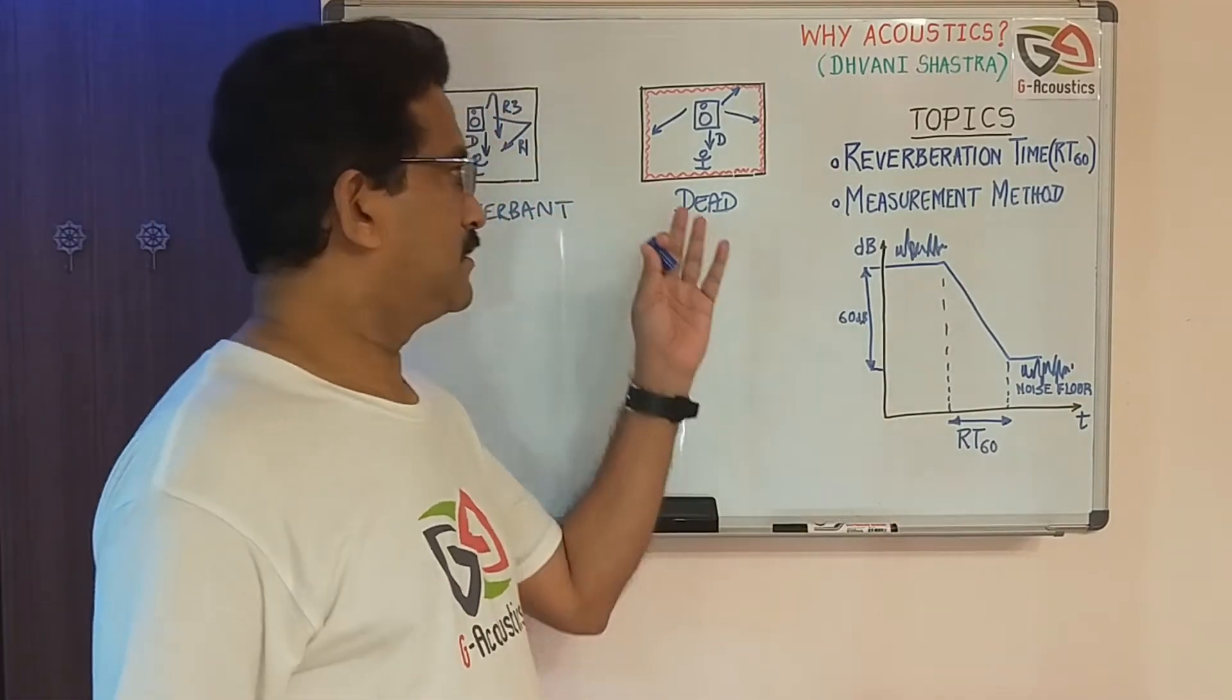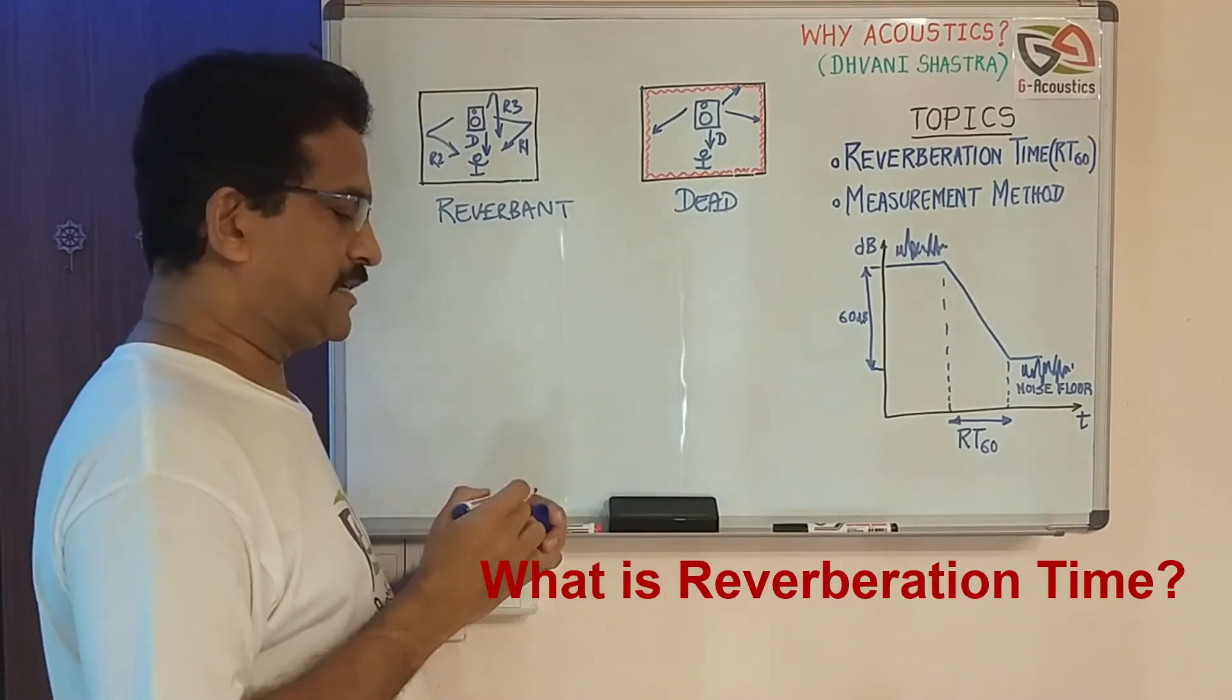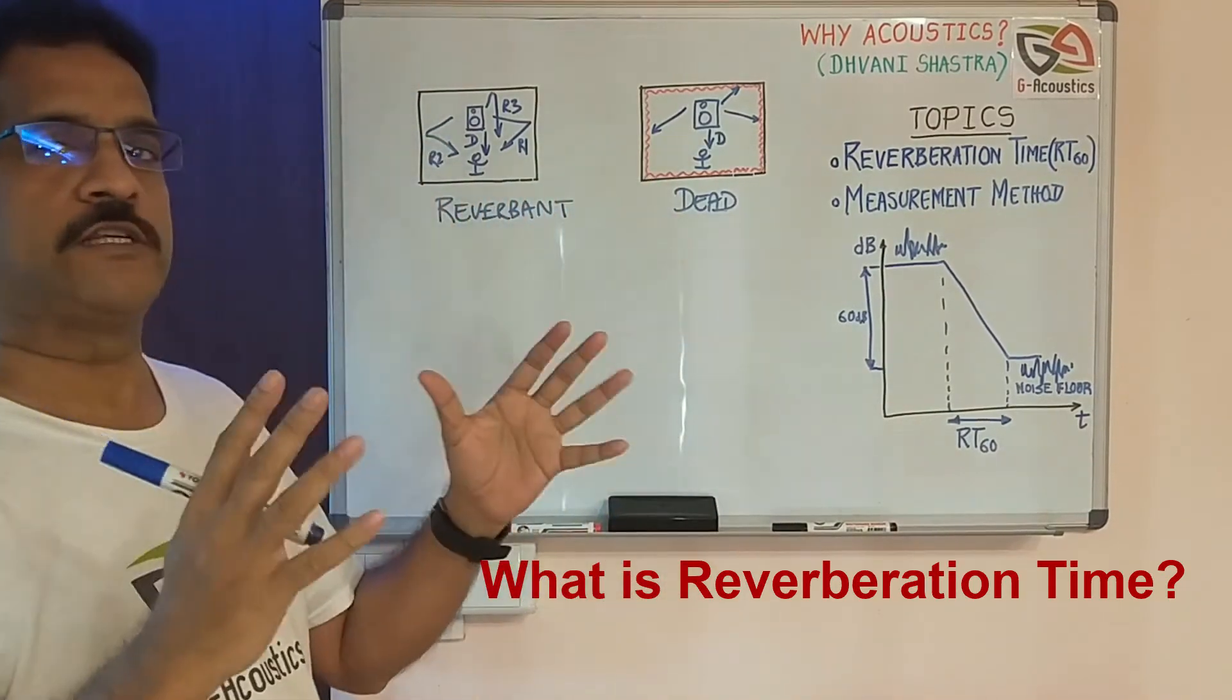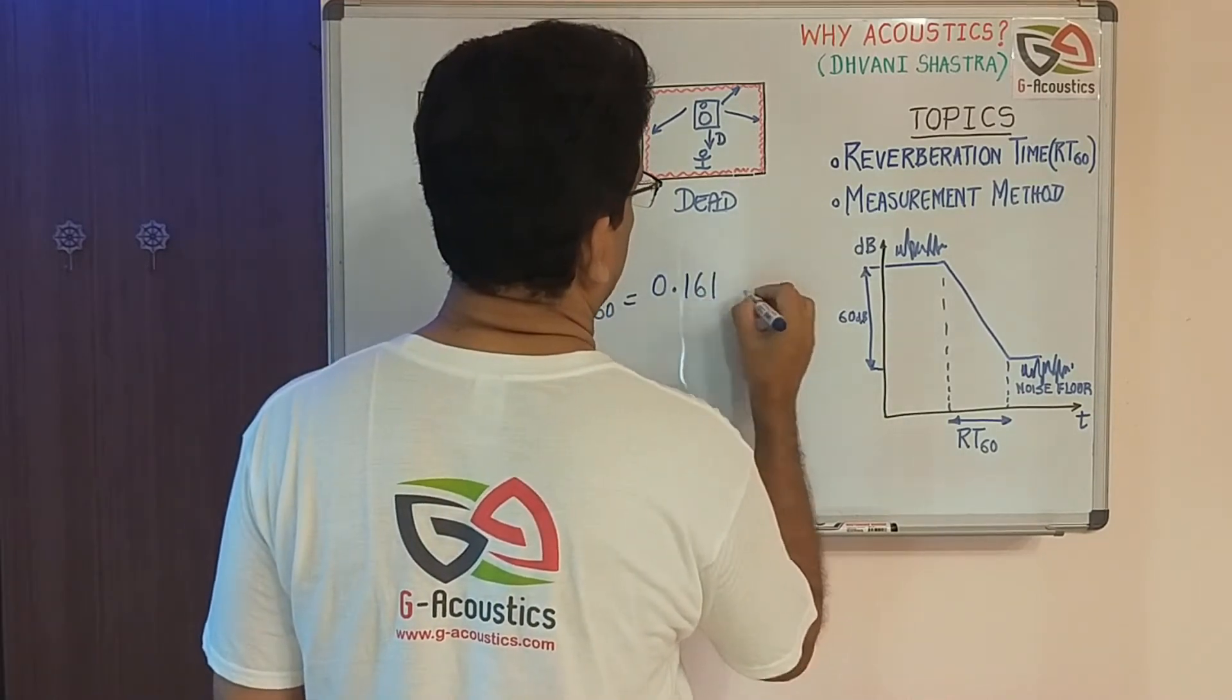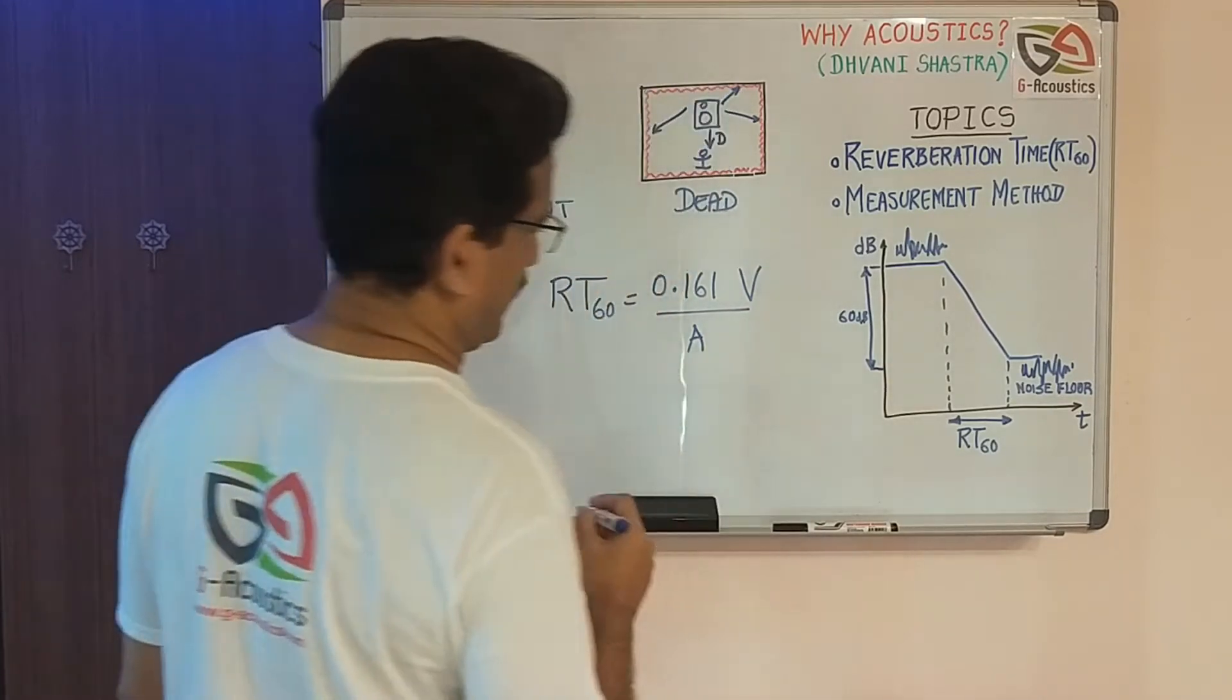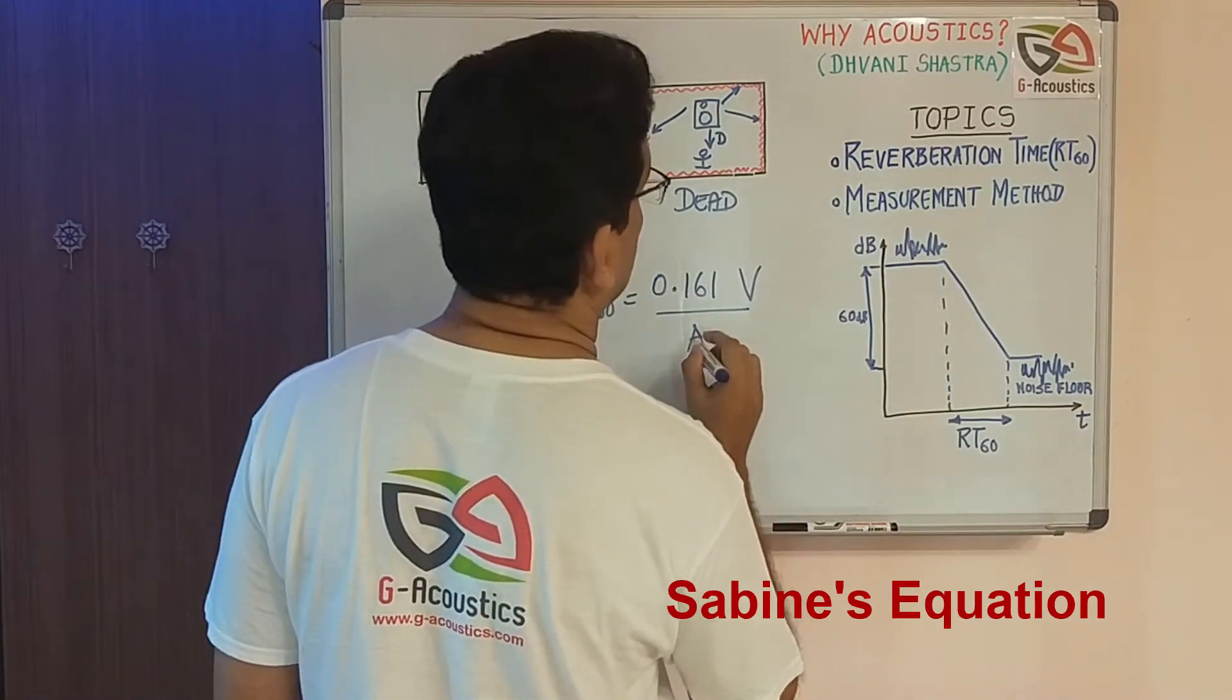What is reverberation time? RT60 = 0.161 × V / A. This is called Sabine's equation. RT60 is related to the total absorption.